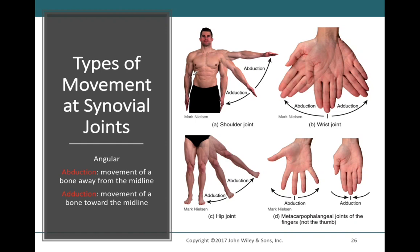Abduction is the movement away from the midline; adduction is the movement towards the midline. In this example, an abducted arm is moved further away from the body's midline. As we bring our arm down closer to the body, that is adduction — we are adding to the midline. We can do this with the hand, fingers, and legs as well. With the hand specifically, we draw the midline down the middle finger and can abduct and adduct the fingers accordingly.